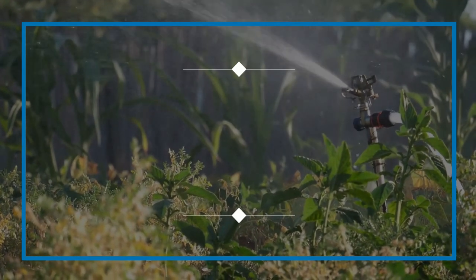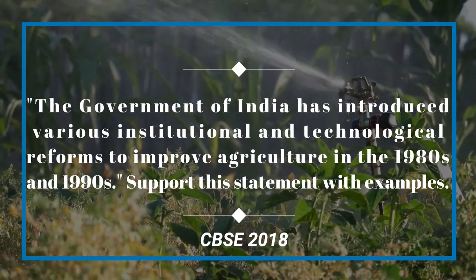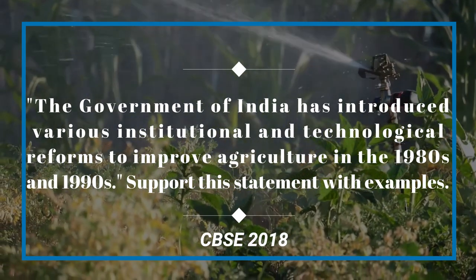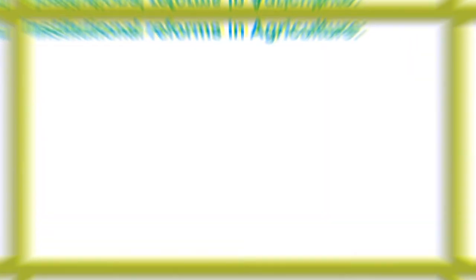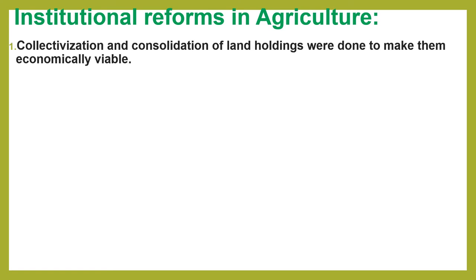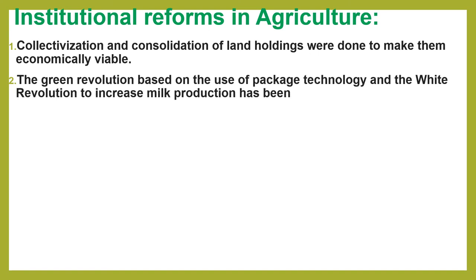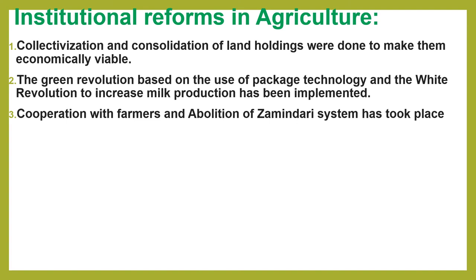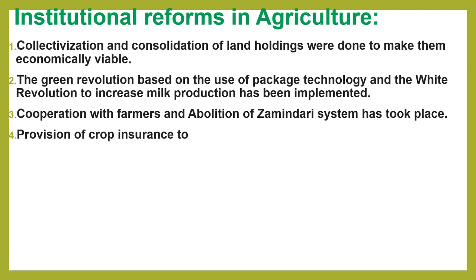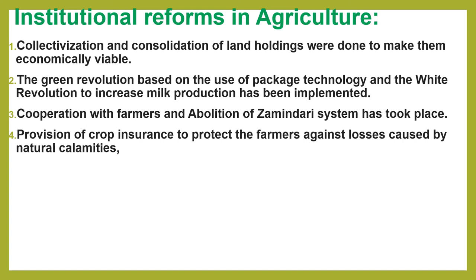The Government of India introduced various institutional and technological reforms to improve agriculture in the 1980s and 1990s. The following are the institutional reforms: 1. Collectivization and consolidation of land holdings were done to make them economically viable. 2. The Green Revolution based on package technology and the White Revolution to increase milk production were implemented. 3. Cooperation with farmers and abolition of the Zamindari system took place. 4. Provision of crop insurance to protect farmers against losses caused by natural calamities such as drought, flood, cyclone, fire and disease was made.